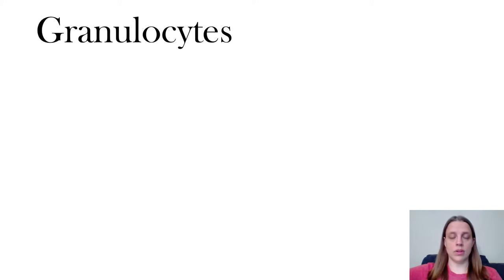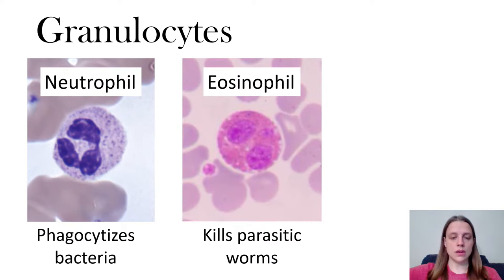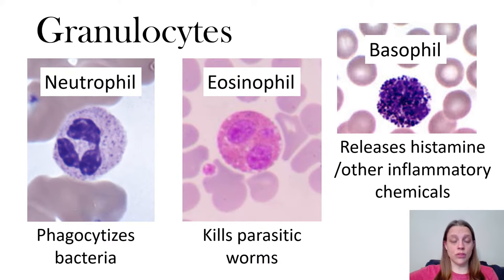There are two main classes of white blood cells. The first class are the granulocytes — they're named granulocytes because they have little granules inside their cells. The first type of granulocyte is the neutrophil, which phagocytizes bacteria. Then there's the eosinophil, which kills parasitic worms. And lastly there are basophils, which release histamine and other inflammatory chemicals.